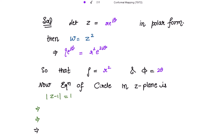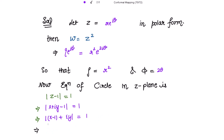The equation of the circle in the z-plane is |z - 1| = 1. Putting z = x + iy, we get |x - 1 + iy| = 1. The modulus gives √((x-1)² + y²) = 1, and squaring both sides: (x-1)² + y² = 1.